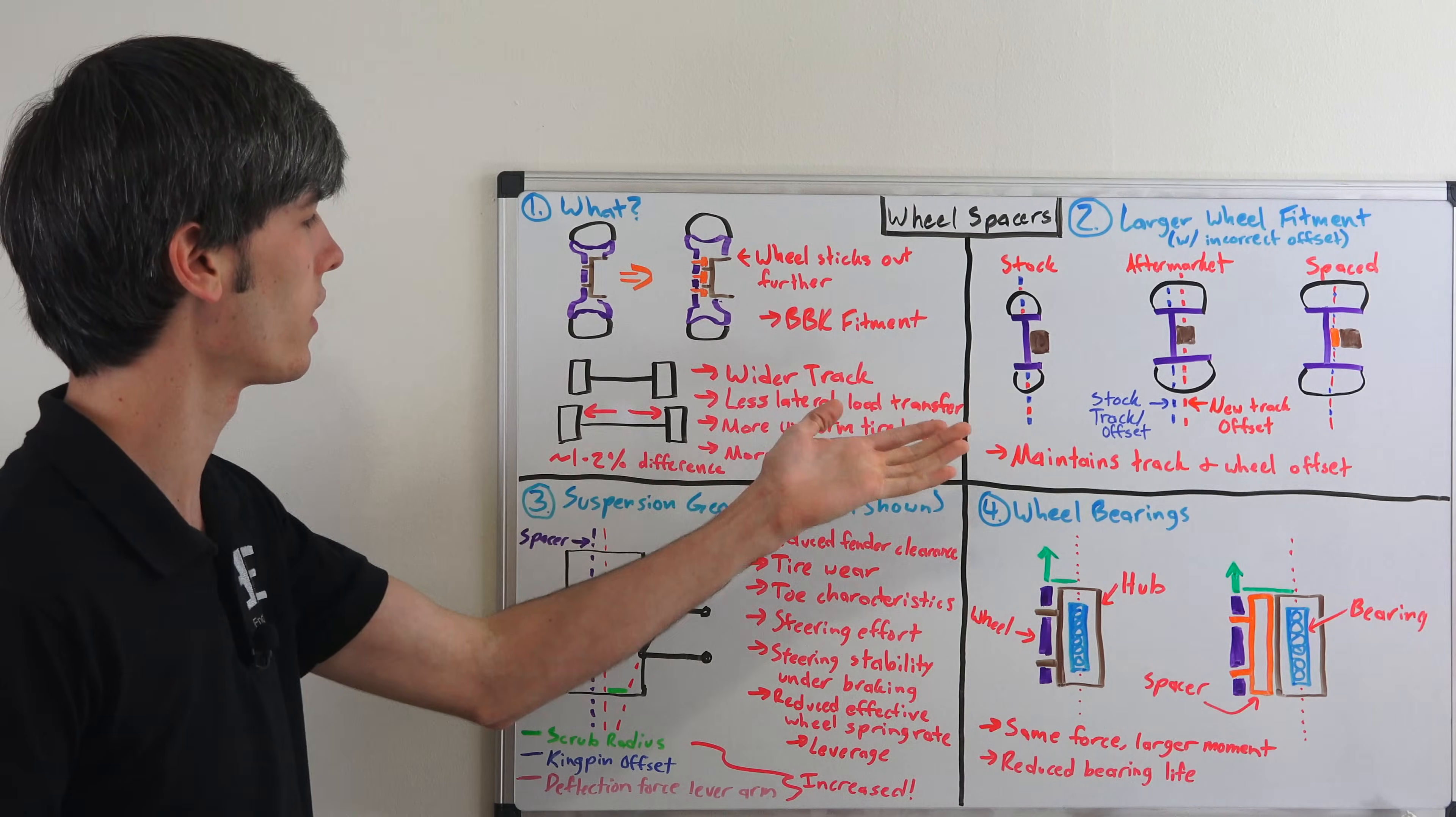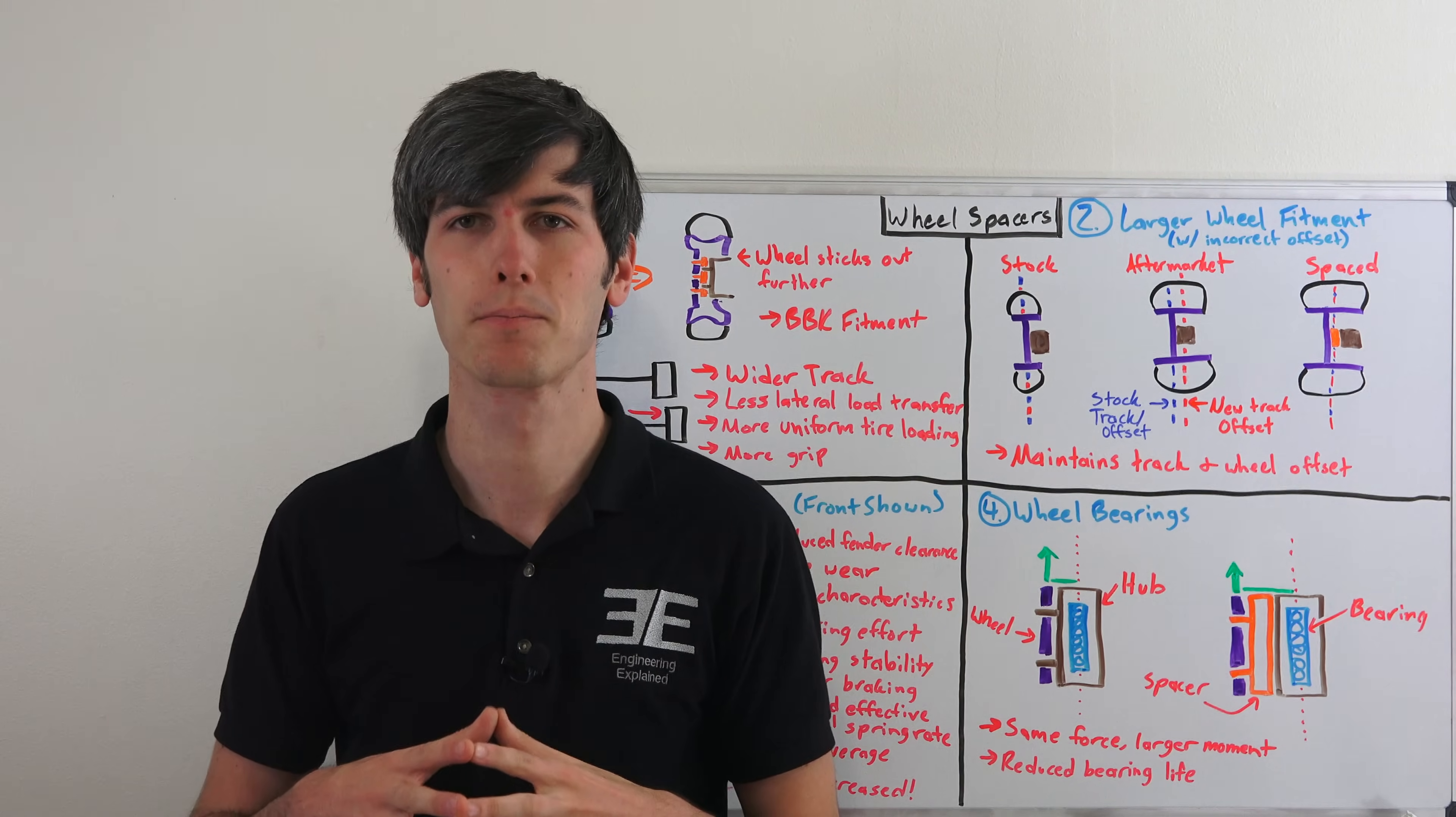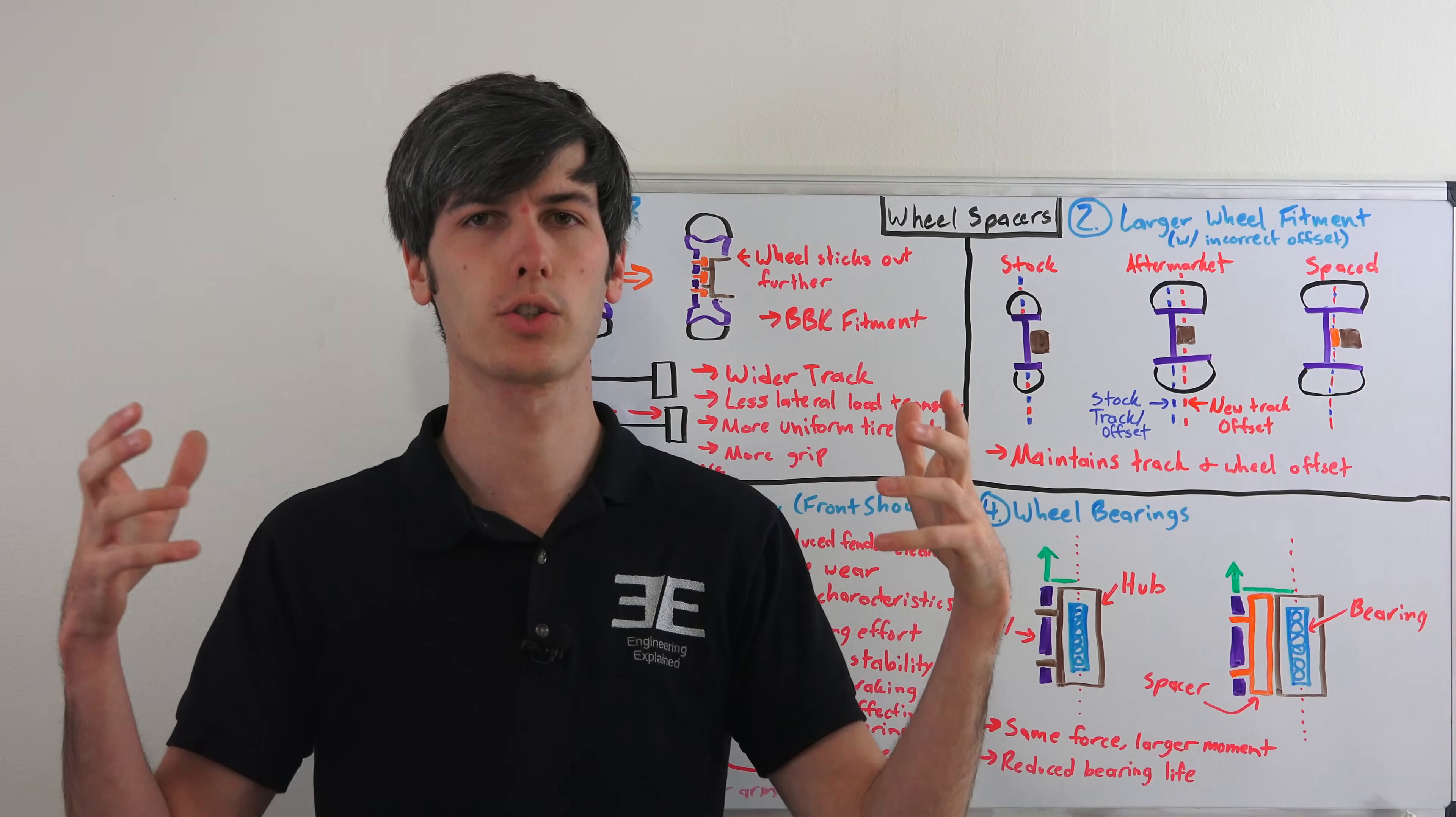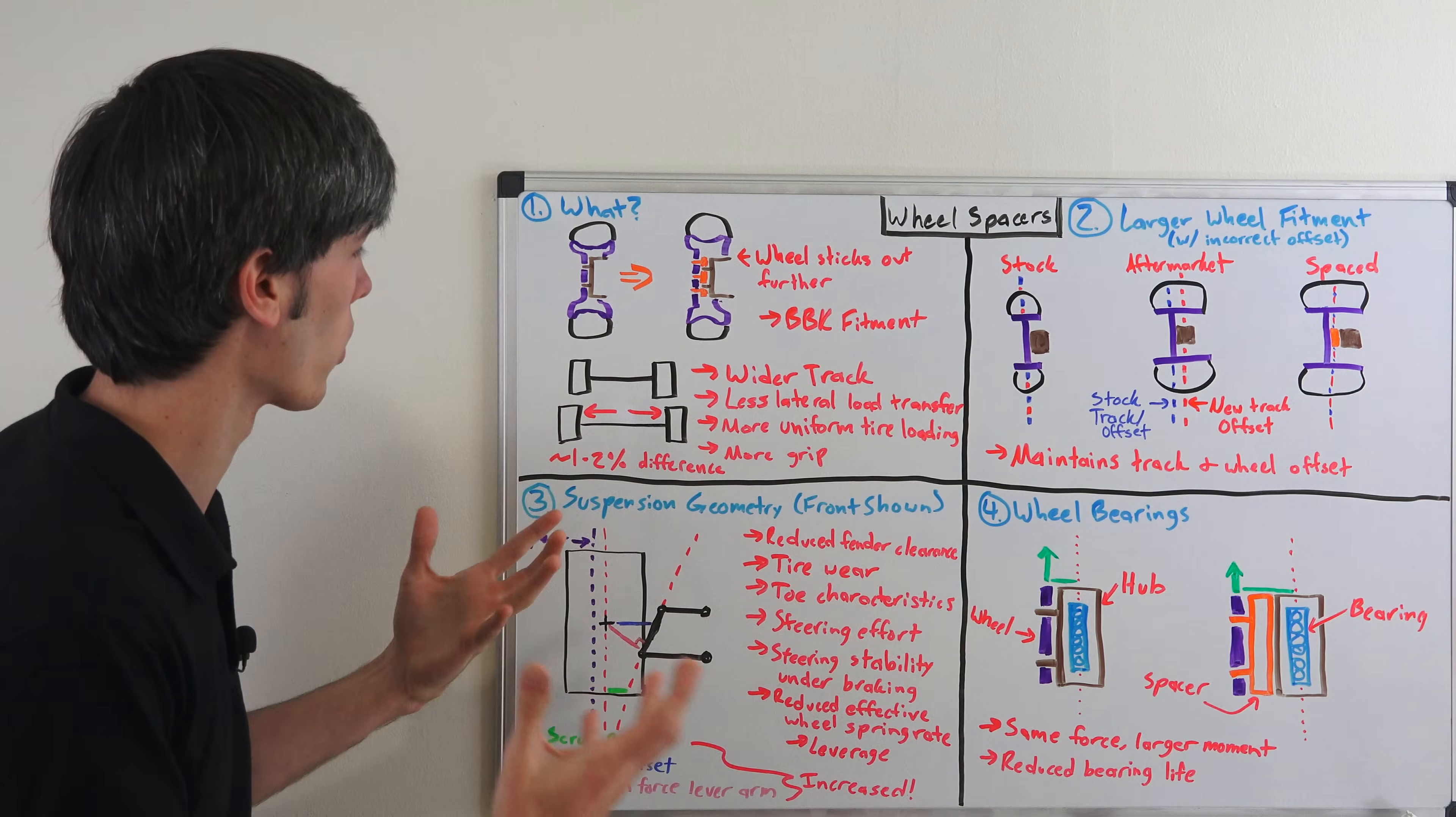Another benefit of doing this is that it gives you a wider track. So what is the benefit of a wider track? Well, if you extend your track out, you have less lateral load transfer under cornering and with less lateral load transfer, you have more even distribution of your load on your tires and with more even distribution of load on your tires, you're going to have more grip.